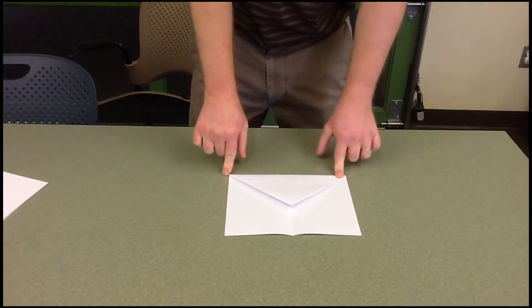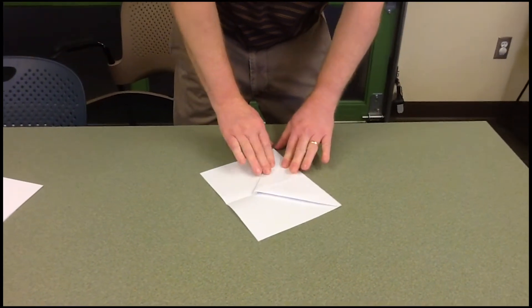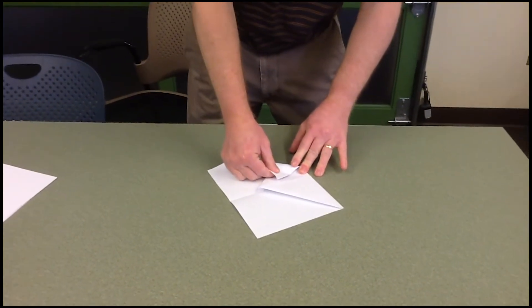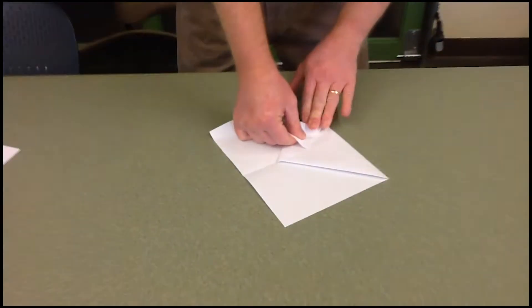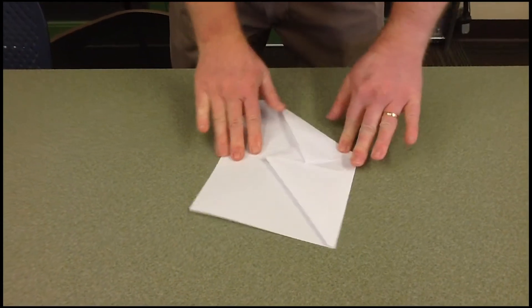Now you're going to take these corners and you're going to come to the middle line. So I'm going to start on this side and make just the point touch the middle line there. It's a good fold.